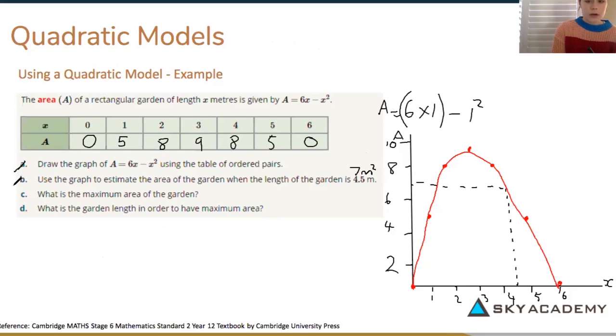Now it says what is the maximum area of the garden and if you remember the maximum turning point would be the highest point of our parabola. So whatever the maximum turning point which would be here, that would be the maximum area of the garden or the highest point of our parabola on the y axis. And so that maximum area of the garden is on the y axis and that would be 9.